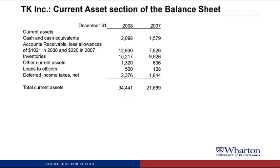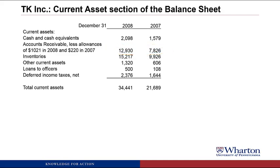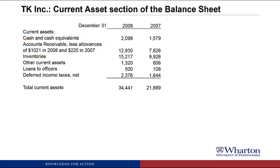Here's the current asset section of TK's balance sheet. The thing we're going to focus on is accounts receivable. The numbers you see — 12,930 and 7,826 — are net receivables, and we see in the disclosure that those are net of allowances of 1,021 in 2008 and 220 in 2007. So here again we see an issue where the allowance for doubtful accounts has grown substantially in 2008.